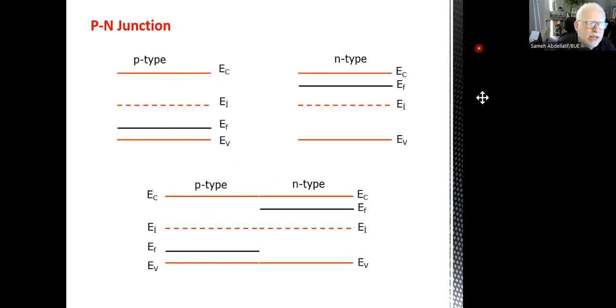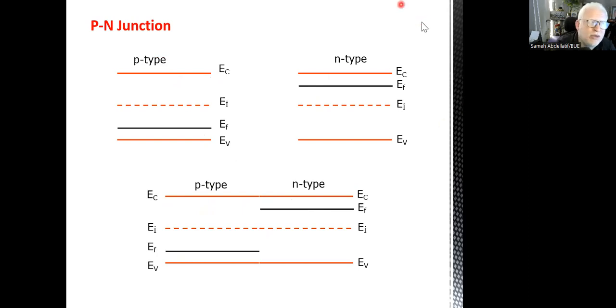This is simply how you can construct an N-type material and a P-type material. In the next video, we are going to discuss what happens when we combine an N-type material with a P-type material in one junction — called a PN junction. Thank you very much.